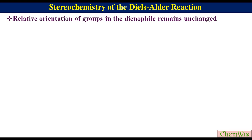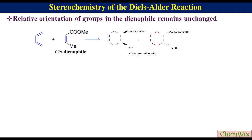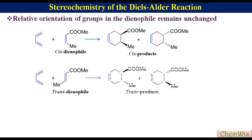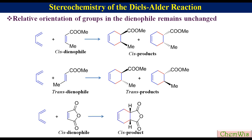For example, the reaction of 1,3-butadiene with cis-methyl crotonate gives the cis product, and the reaction of 1,3-butadiene with trans-crotonate gives the trans product. Similarly, reaction of 1,3-butadiene with maleic anhydride, which is a cis dienophile, produces the cis product.